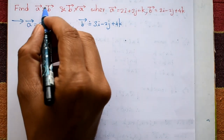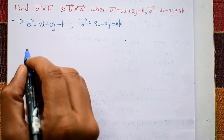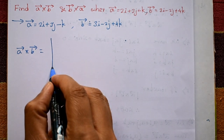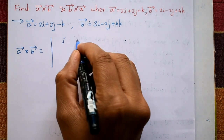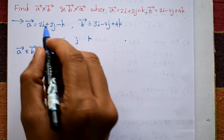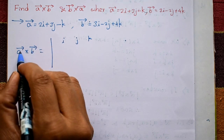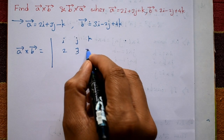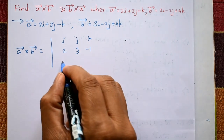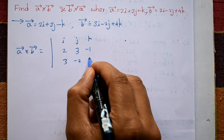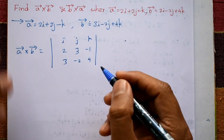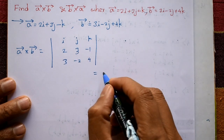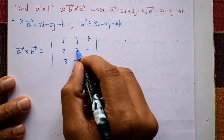Solution: first we find vector a cross b. Taking the determinant form with i, j, k in the first row, vector a components 2, 3, minus 1 in the second row, and vector b components 3, minus 2, 4 in the third row. Now expand this determinant.